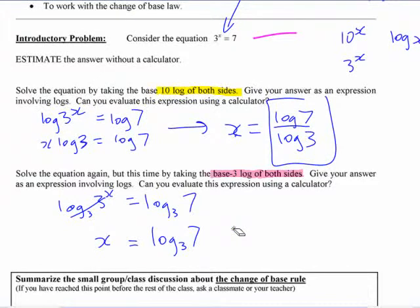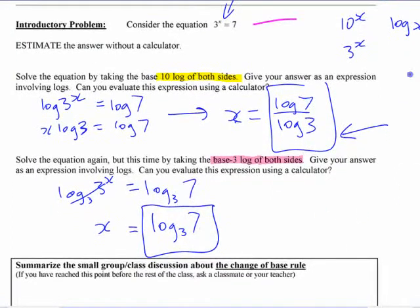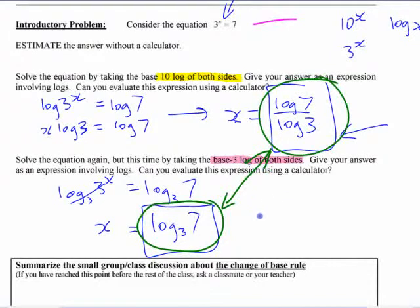The reason we haven't done that in the past is because there is no button that says log base 3 of 7. But the fact that we've got x equals this and x also equals this, what has to be true now? If we've solved it one way and gotten this and solved it another way, what has to be true? They're equal, right? So the rule is going to look something like this: log base 3 of 7 equals log 7 over log 3.